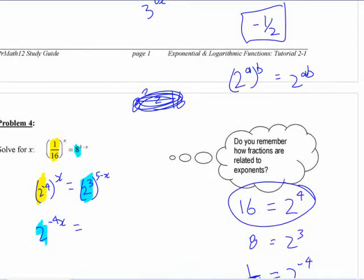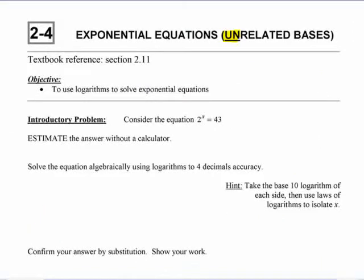But most equations that you would come up with, if you made one up at random, wouldn't be that. They'd be numbers like two and forty-three, or whatever. Numbers that you can't write as powers of one another, one power of the other. If you want to solve this, now that you know something about logarithms, you can solve this.